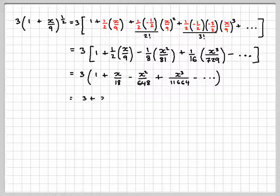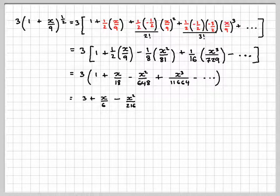Then multiplying through by 3, so we get 3 plus x over 6 minus x squared over 216, plus x cubed over 3888, and this will carry on.